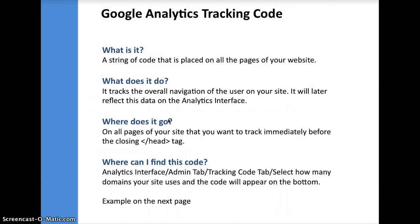The second code is the Google Analytics tracking code. This is a string of code that is placed on all the pages of your website that you want to track. What it does is it tracks the overall navigation of the user on your site, and it will later reflect this data on the Analytics interface. You want to make sure you place this code on all the different pages of your site, because you want to be able to track the client — maybe see where they lead off, maybe see where they abandoned their cart.